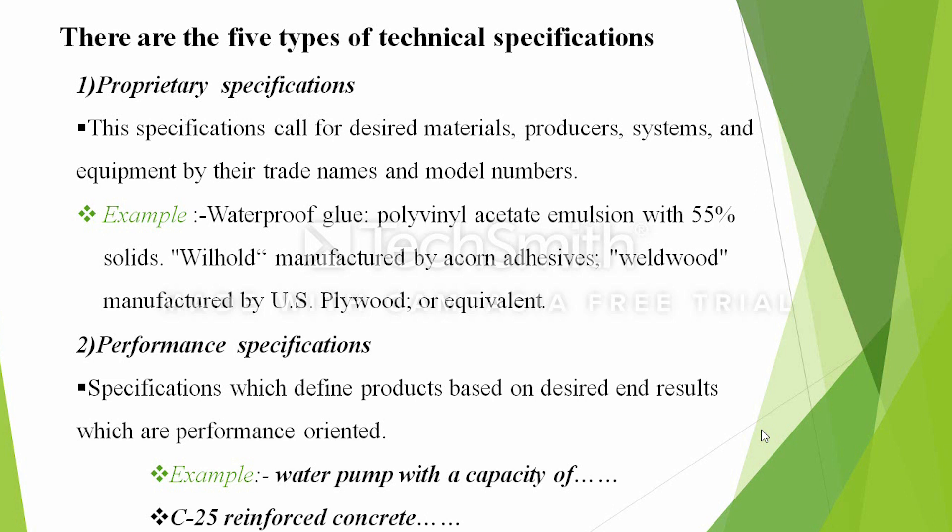So there is a technical specification. The proprietary specification describes the desired material — the product, the equipment, the trade names, and the model numbers. The proprietary specification is the priority specification. You can see the number of materials and all types of production products.